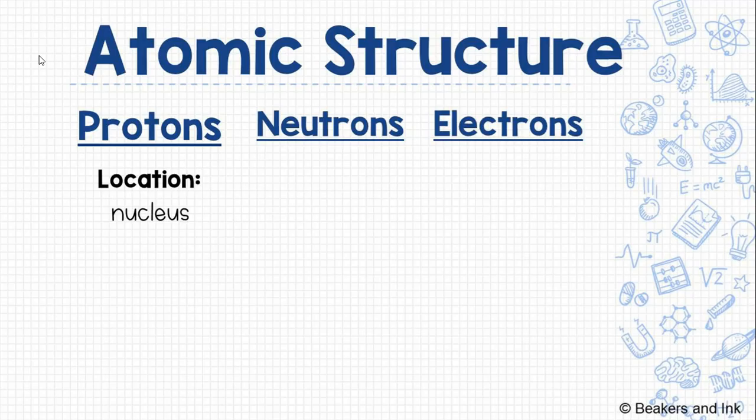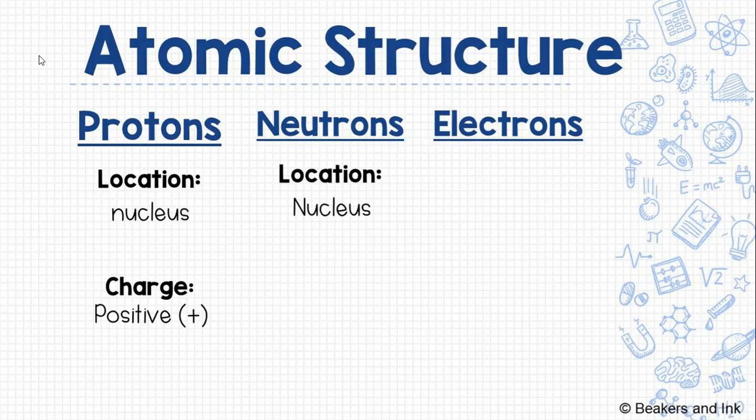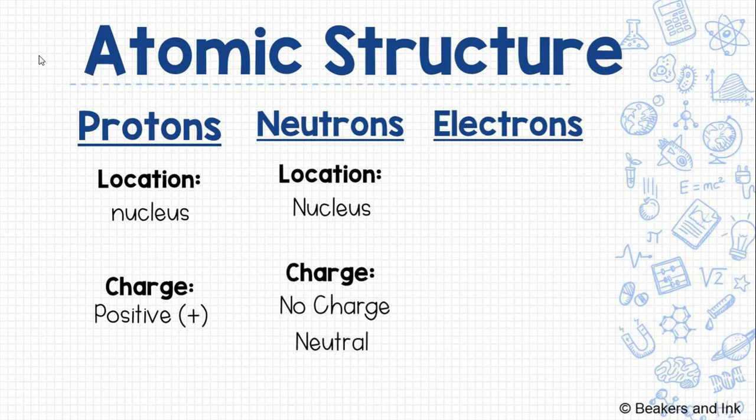Both the protons and the neutrons are located in the nucleus of the atom. The nucleus is the center of an atom. Protons have a positive charge. Neutrons, also located in the nucleus, don't have a charge. They're neutral.